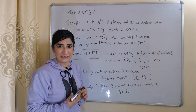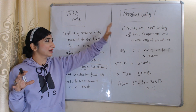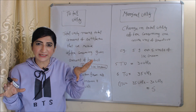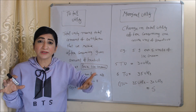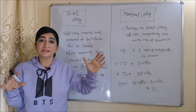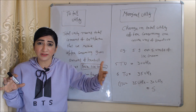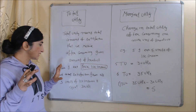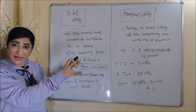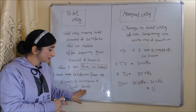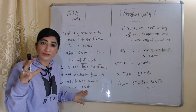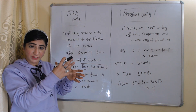Now we will see what is total utility and what is marginal utility. Total utility is the total amount of satisfaction which we receive after consuming a given amount of product. For example, when I eat 5 ice creams, the total satisfaction from all 5 units of ice cream is equal to 30 utils. This 30 utils will be called my total utility.